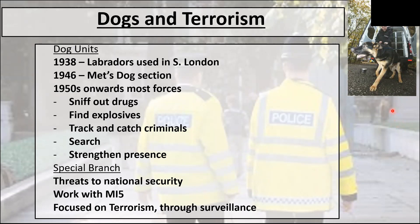Dogs are used to strengthen police presence at events — often referred to as 'furry missiles'. A big, strong, fit, healthy dog barking and looking quite cross at you might make you think twice about having a go at a police officer. Every police force today has its own Special Branch, which works alongside MI5 in combating terrorism using surveillance to detect and prevent terrorism — particularly homegrown terrorists. Various strategies including Prevent are tied in with that.